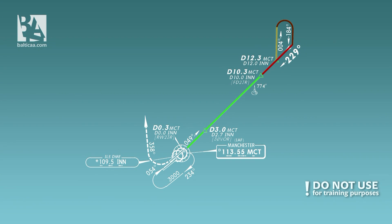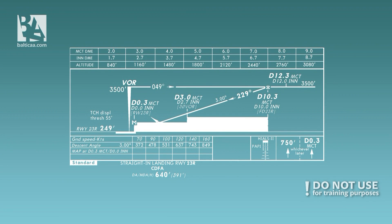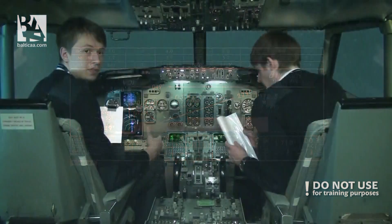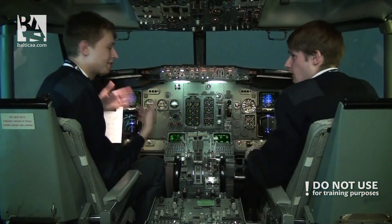We will continue on this track until a distance of 10.3 nautical miles from Manchester VOR, where we will start our descent at an approximate rate of 750 feet per minute, which corresponds to our approach speed of 138 knots. I will be monitoring that our descent is going according to the provided chart, and at the minimum decision altitude of 640 feet we will continue visual. Now we know the procedure — let's go and do it.